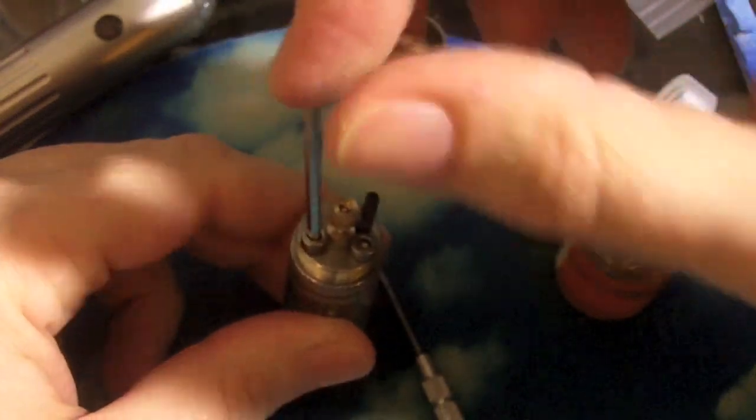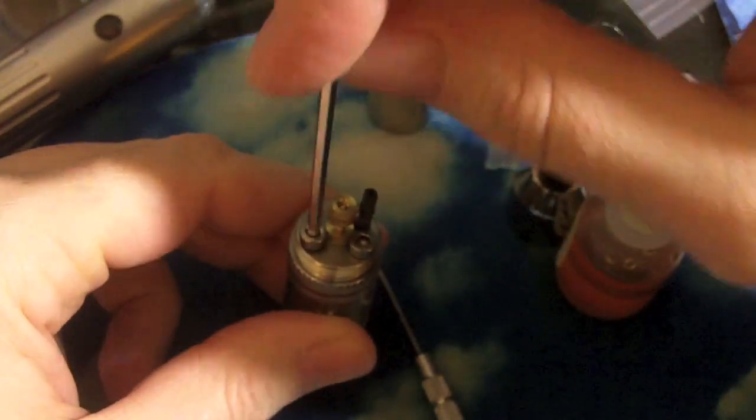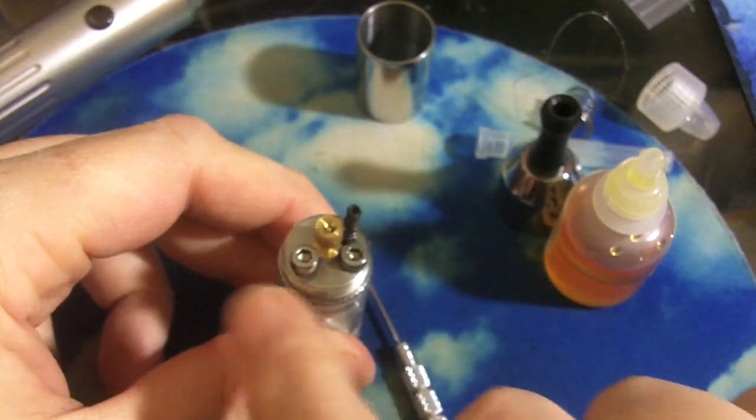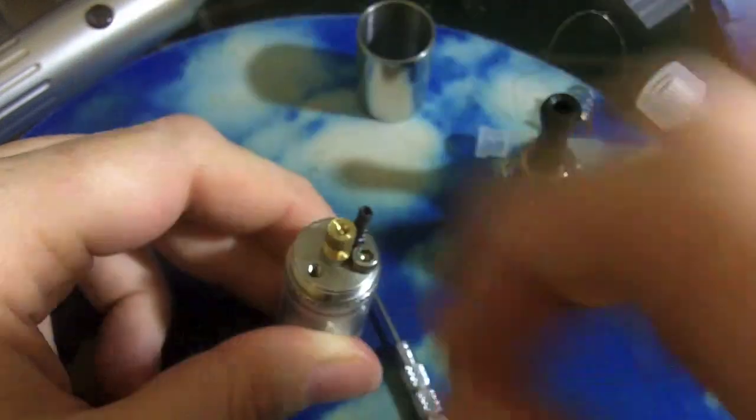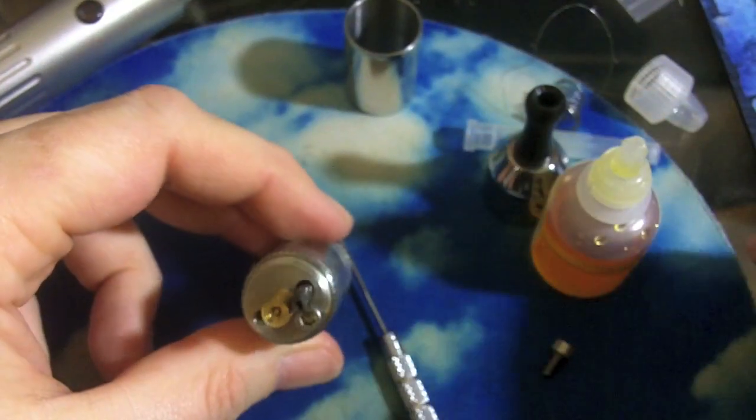That's what this other little nut is for. So we'll take it out with the Allen wrench and then twist it the rest of the way with our fingers. Get in there and pull it out. That is the opening for putting juice.